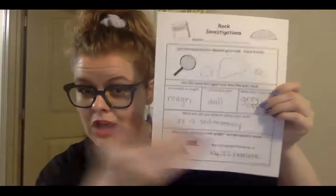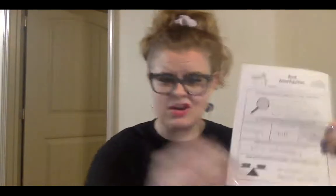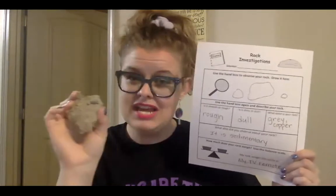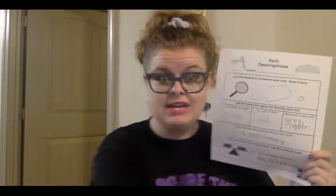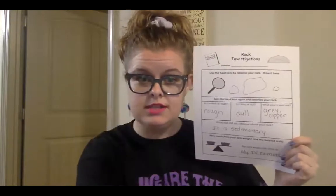I want you to go on a walk and find some rocks, then investigate and compare them like I did. I'm going to send you a rock investigation paper so you can draw and investigate your rocks. I drew all three of my rocks at the top. It says: is your rock smooth or rough? Most of my rocks were pretty rough, except maybe one was kind of smooth. Right here it says: is it shiny or dull? None of my rocks were shiny, so I'm going to say dull. And then: what color is your rock? I said gray and copper, because those were the two colors I found.